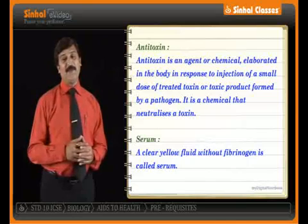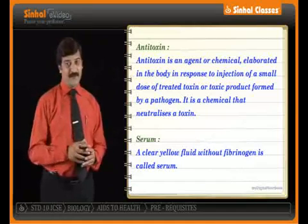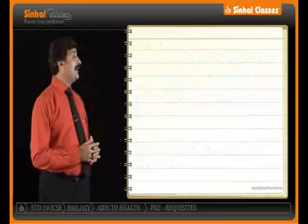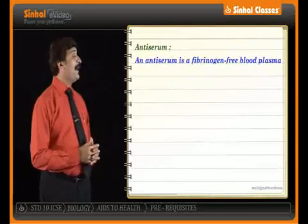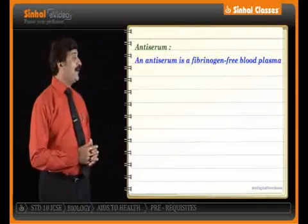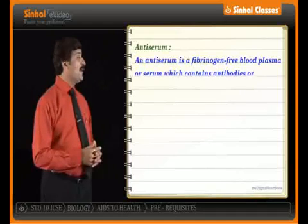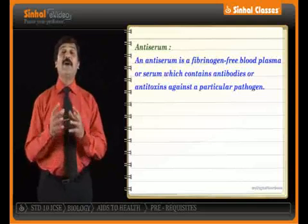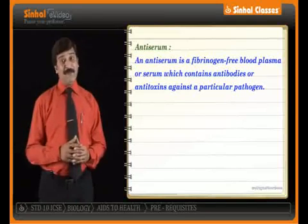Serum accounts for a main part of blood. An anti-serum is a fibrinogen-free blood plasma or serum which contains antibodies or anti-toxins against a particular pathogen.